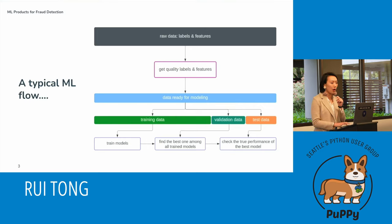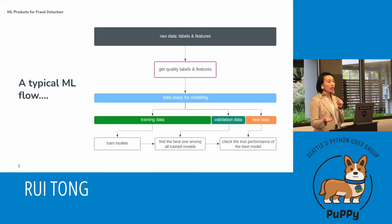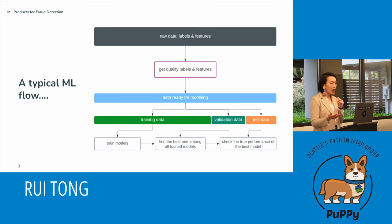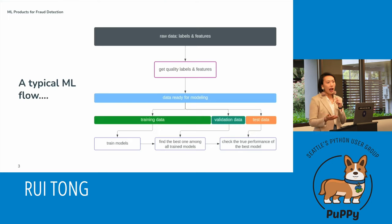Let's take a quick look at the typical ML flow. Usually what people do is take tons of raw data — that includes both the labels and features if you're doing supervised learning — and then try to sift through the data to get high-quality labels and features. Once the data is ready for modeling, you partition it into training data to train models, validation data to select the best model among candidates, and test data to truly measure how your best model performs in the real world.